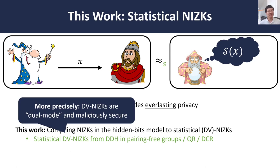More precisely, our constructions actually provide a dual-mode property — namely, they can be instantiated to either provide statistical zero knowledge and computational soundness, or computational zero knowledge and statistical soundness. As I will also describe later on, these constructions also satisfy a concept called malicious security, where zero knowledge holds even if the verifier samples its verification key in a malicious manner.